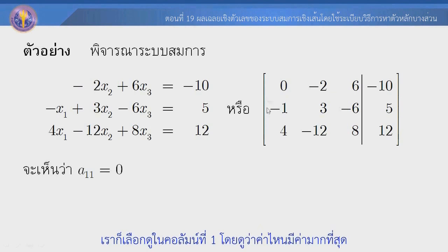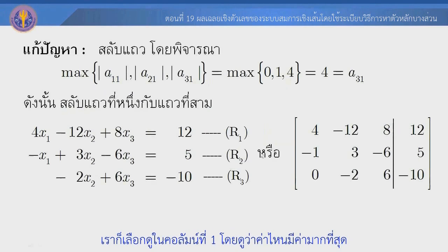เราก็มองหาค่าในคอลัมที่ i ดูว่าในแถวที่มากกว่าหรือเท่ากับ i แถวไหนให้ค่าในคอลัมที่มีค่ามากที่สุด สมมติให้ค่าของ AKI คือค่าในแถวที่ K เป็นแถวที่ให้ค่ามากสุด แล้วก็จะทำการสลับระหว่างแถวที่ i กับแถวที่ K จากนั้นเราก็พิจารณาระบบสมการที่เรายกมาก่อนหน้า (We look for values in column i for rows greater than or equal to i, finding the row with the maximum absolute value. Suppose AKI is the maximum; we then swap row i with row K. Now we consider the example system from earlier.)